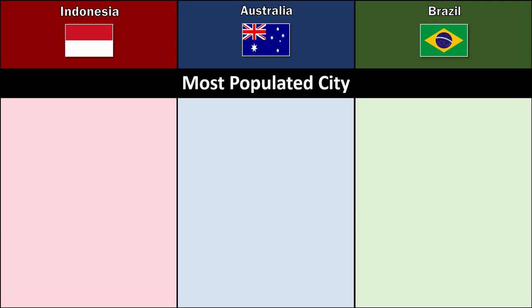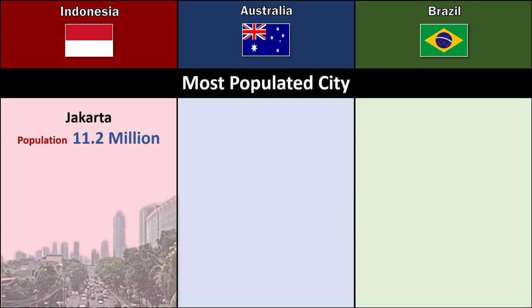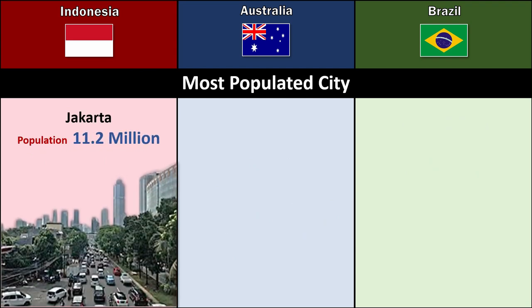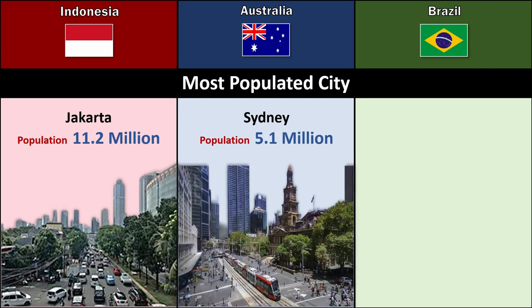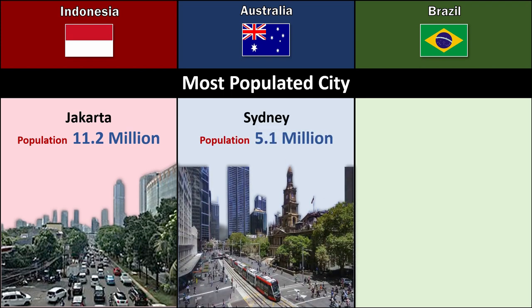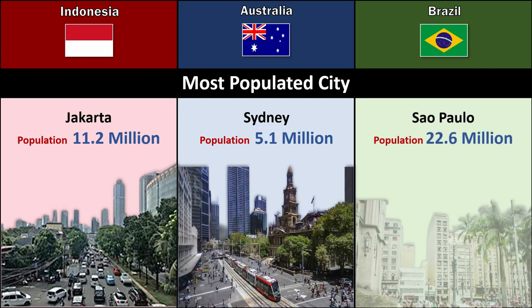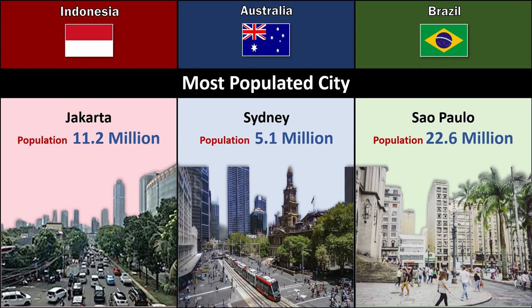Most Populated City: Jakarta (Indonesia) population 11.2 million, Sydney (Australia) population 5.1 million, Sao Paulo (Brazil) population 22.6 million.